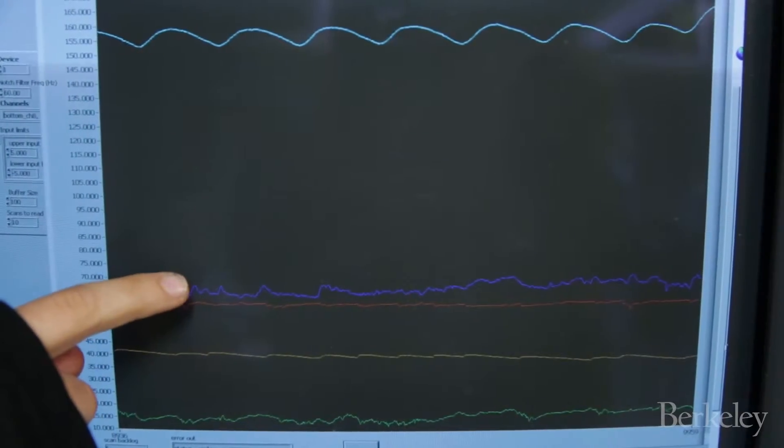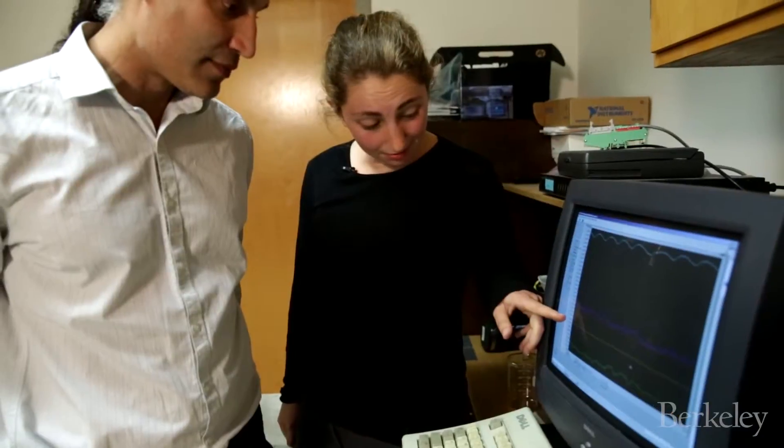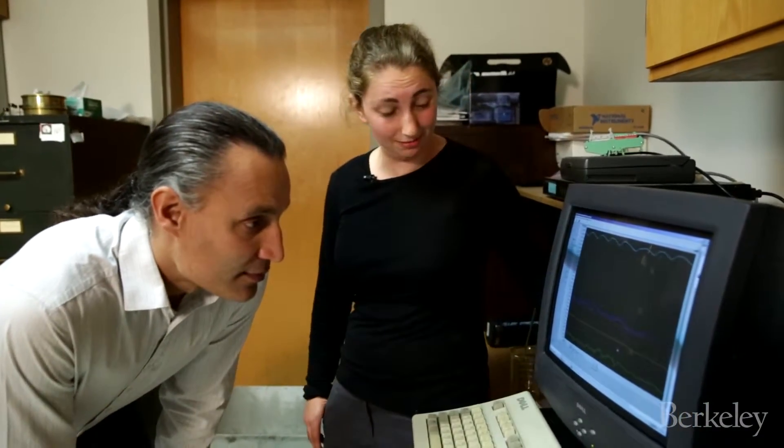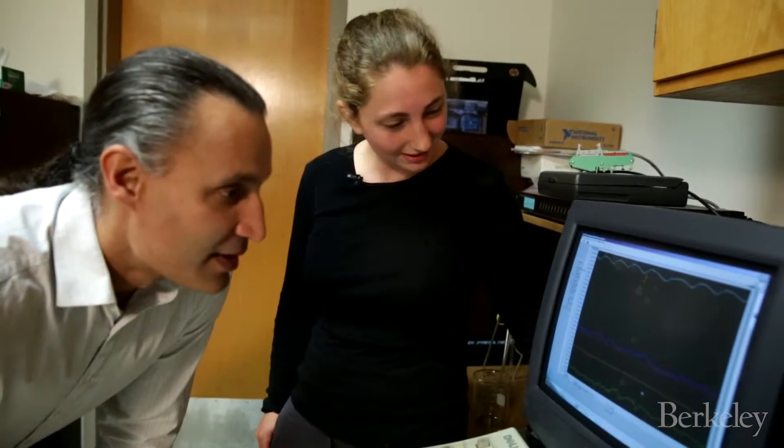Today we're measuring the temperature in the bottom and the top of the model. And then the other lines we're looking at are temperature of our heat source and temperature of the surrounding air, just so we can see that our environmental conditions are constant. We leave this model running for hours and hours, sometimes days.